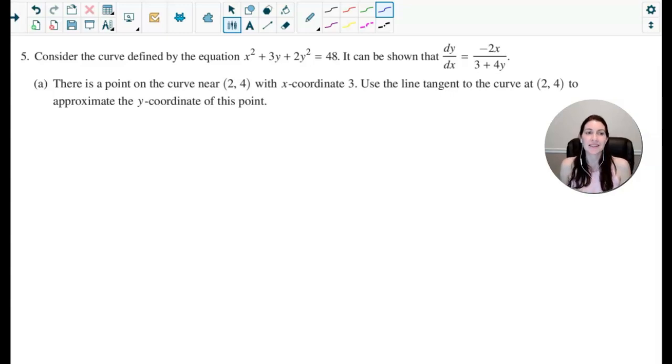In part a, it says there is a point on the curve near the point 2, 4 with an x-coordinate of 3, and use the line tangent to the curve at 2, 4 to approximate the y-coordinate of this point.